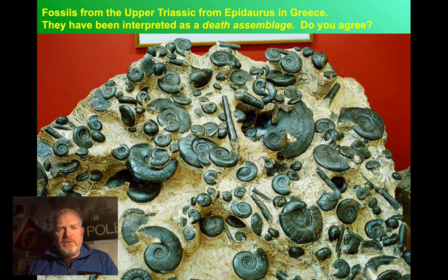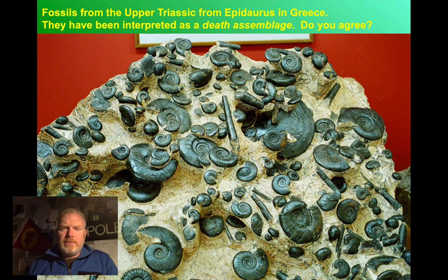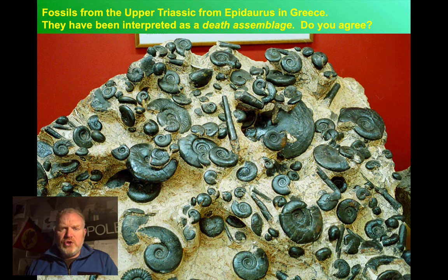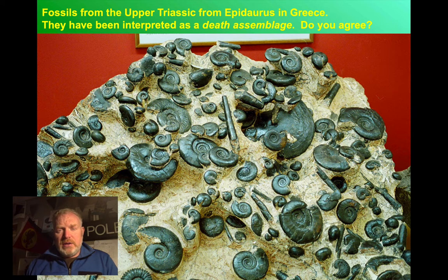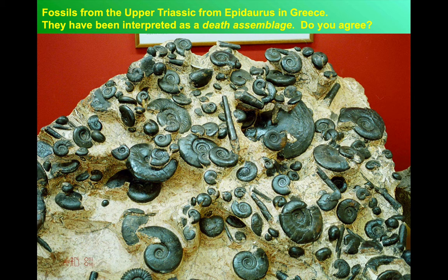This is an assemblage of fossils — a really quite beautiful specimen — from Greece, from the Upper Triassic. These particular fossils have been interpreted as a death assemblage. What do you think about that? Would you agree with that interpretation? Perhaps a specimen like this shows us that we've got to think quite carefully about these assemblages — we can't just immediately jump to any one conclusion. Does this particular assemblage share some features of a life assemblage? Does it have some features of a death assemblage? Think about how these particular organisms would actually have lived.